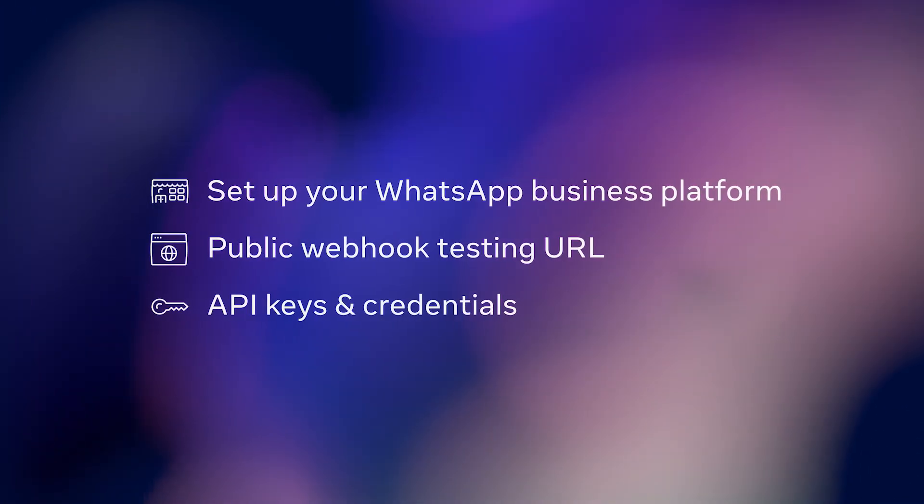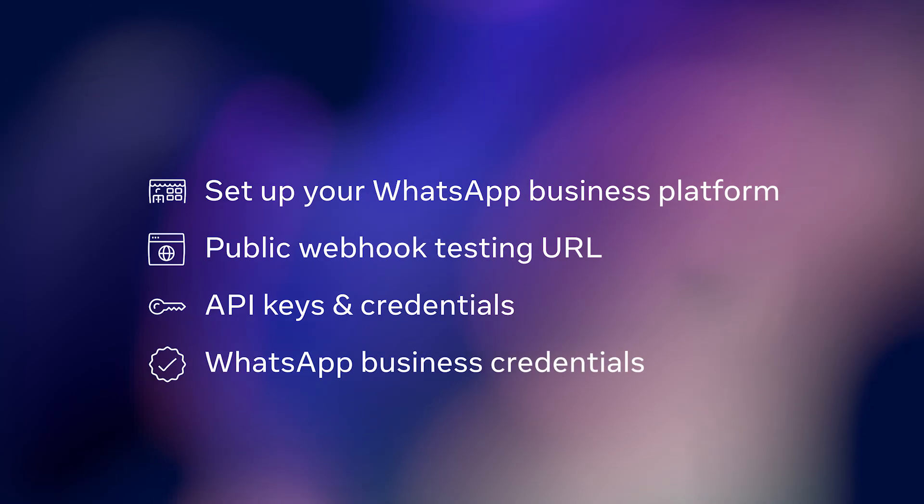Finally, grab your WhatsApp Business credentials. From the Meta for Developers apps dashboard, note down your temporary access token, your phone number ID, and recipient phone number. You will need these to connect your bot to WhatsApp.